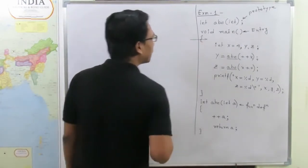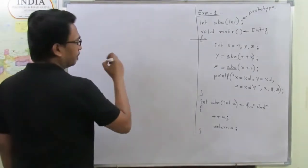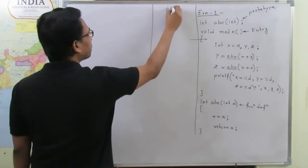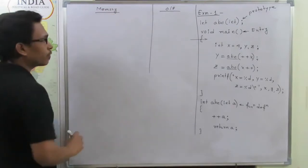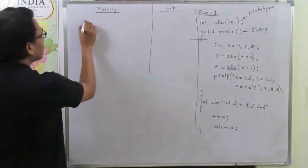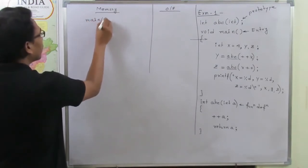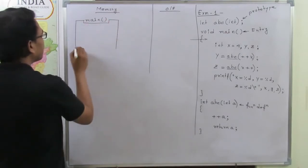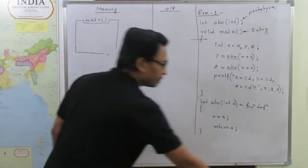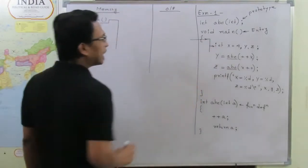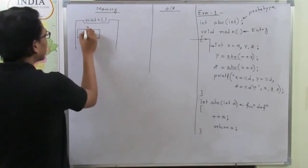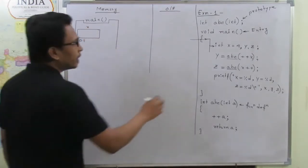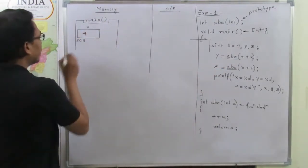System starts execution from the main function, so first a memory block is created for main. Inside this main function, the first instruction is `int x`, so the system will allocate a memory block for variable x. Let's say the address is 2011, initialized with 4 — so the value will be 4.